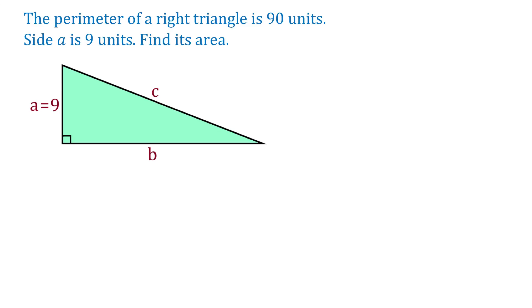Hello. In this figure, we have a right triangle and the perimeter of this triangle is 90 units. If the left side is 9 units, then what is the area of this triangle?